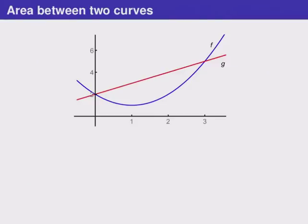Suppose we have two functions and instead of finding the area under just one of them we want to find the area between them. By the area between them we mean between the points where they intersect and on this picture that means we want the area from here all the way up to there.